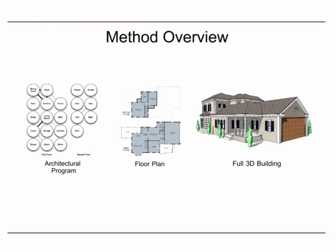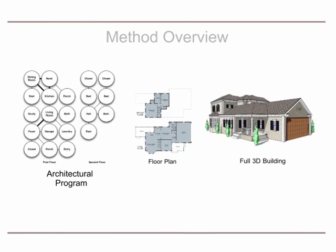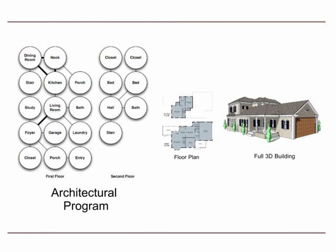Our approach is motivated by a building layout process that is common in real-world architectural practice. The first step of our synthesis pipeline generates an architectural program from the given high-level requirements. The architectural program specifies each room in the building, its adjacencies, and its approximate dimensions. This architectural program is generated by a Bayesian network trained on real-world data.